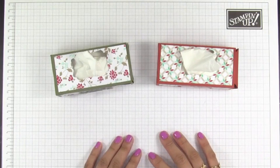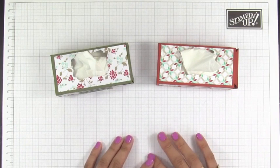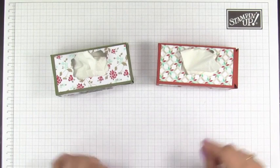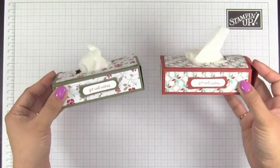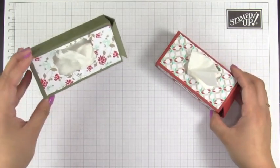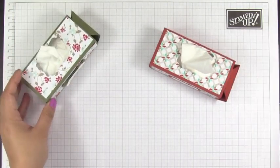Hey everyone, it's Mayumi here from stampengeek.com. Welcome to my channel. Today I have a very cute project to share with all of you and it is a tissue box holder. This is Cajun Craze and Always Artichoke.